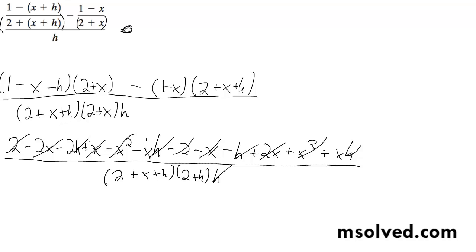And the h cancels out here, and the x's cancel out. So we're left with negative 2 minus 1, which becomes negative 3.